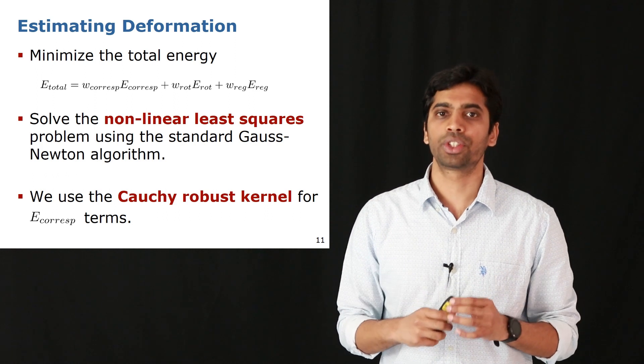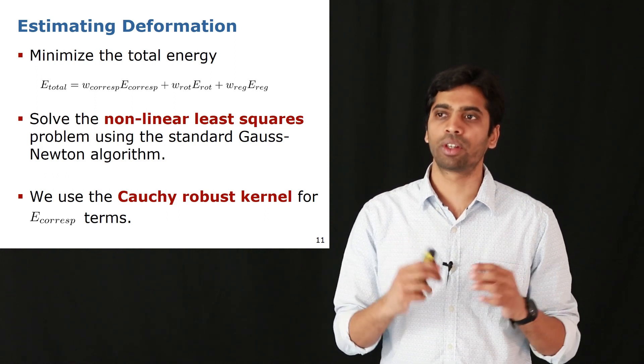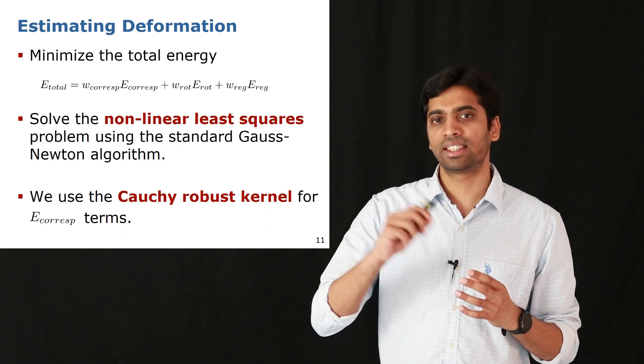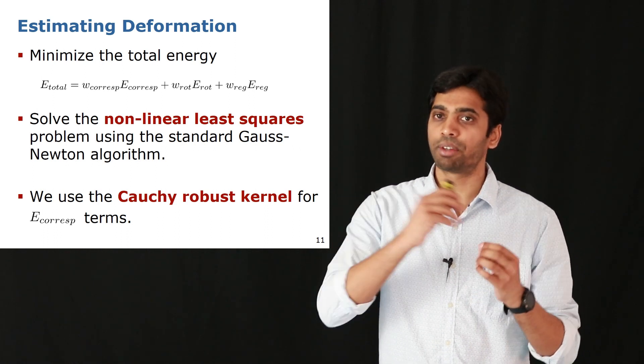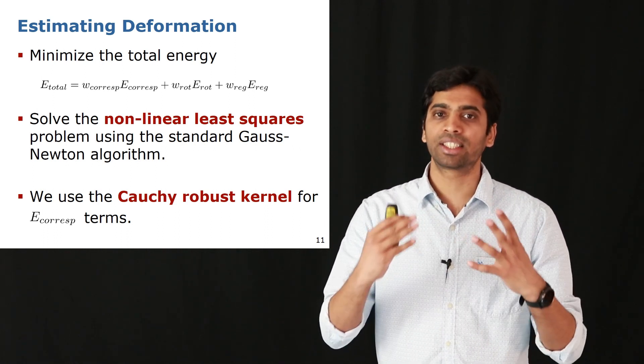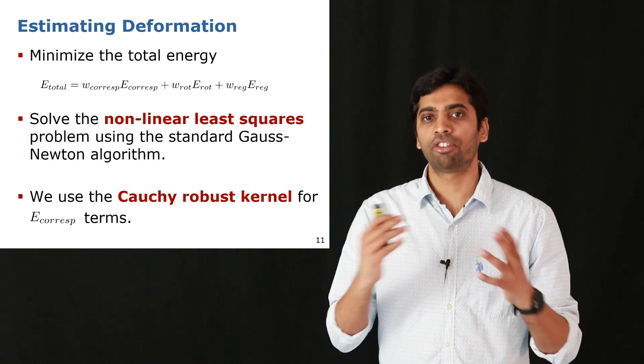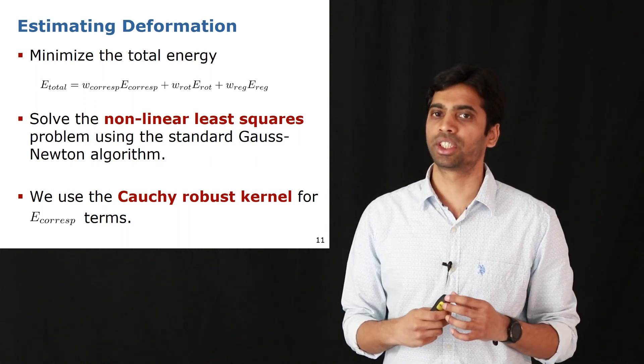We also use the Cauchy robust kernel for the correspondence terms. This is done so that in case there are some wrong correspondences coming from the skeleton matching step, it doesn't completely diverge our solution for the deformation estimation step.